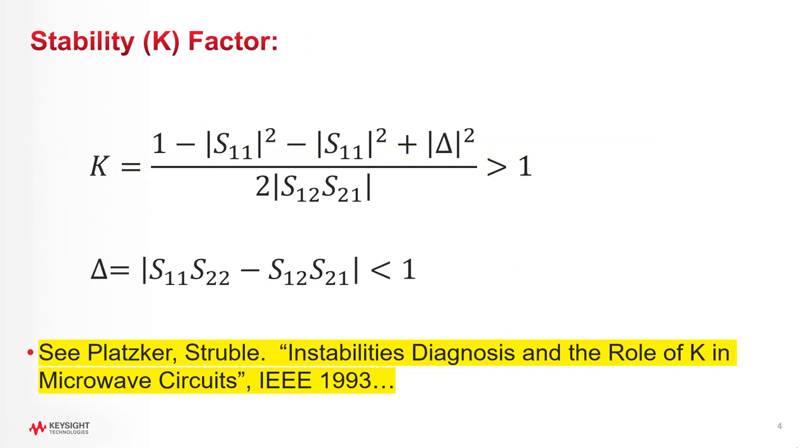If you took any RF microwave courses in college, you probably learned about Rowlett's stability factor. And all you need to do for that is take the s-parameters of your circuit, run them through some equations, and determine stability. It's nice and easy. And we all learned that if the k-factor is greater than one and the magnitude of the determinant is less than one, you're all good. But unfortunately, I have to break some bad news here. That's not true.